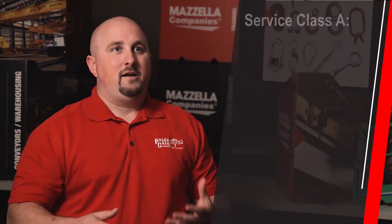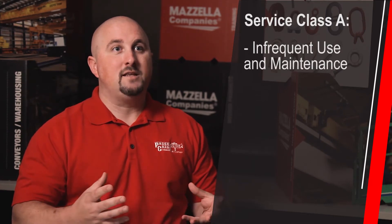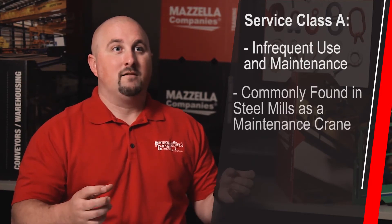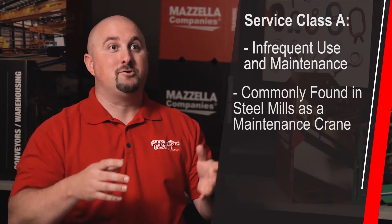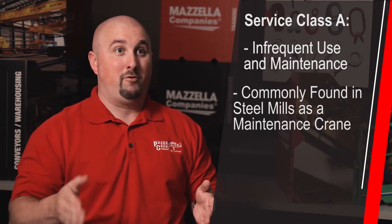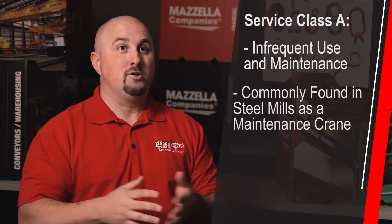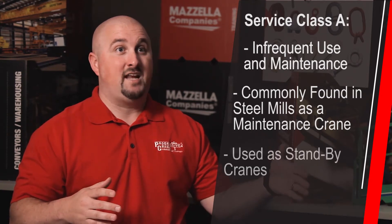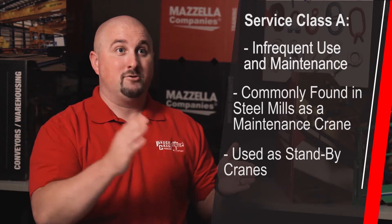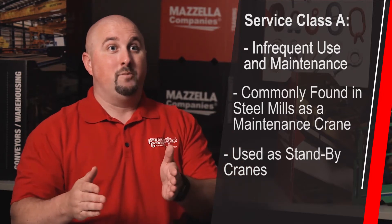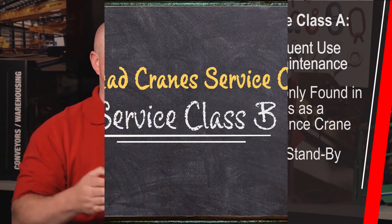A Class A crane is infrequent use in maintenance. You typically see these in a steel mill as a maintenance crane. It's used to lift parts up for the main process cranes as they go down. You would also see this used as a standby crane, so if a main crane goes down you can move this crane in to perform lifts while the other one is getting fixed.